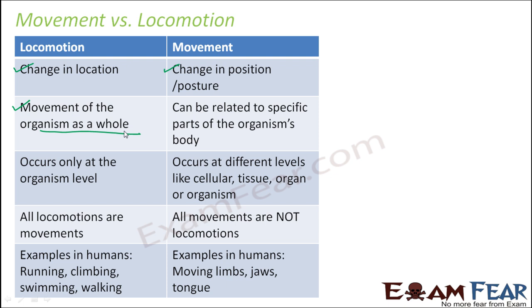Whereas in case of movement, it can be related to specific parts of the organism's body. For example, if the fingers of a person are moving, then we say that there is a movement — it can be specific parts of the body. Locomotion occurs only at the organism level, for the entire organism.